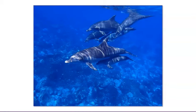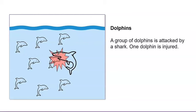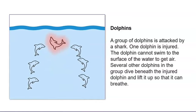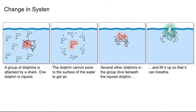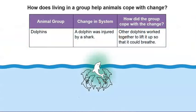Let's look at another animal group. Did you know that a group of dolphins is called a pod? How do you think this pod of dolphins will cope with a change to their system? A group of dolphins is attacked by a shark. One dolphin is injured and cannot swim to the surface of the water to get air. Several other dolphins in the group dive beneath the injured dolphin and lift it up so that it can breathe. The dolphin system changed when one of the dolphins was injured, and the other dolphins coped with the change by lifting the injured dolphin so that it could breathe.